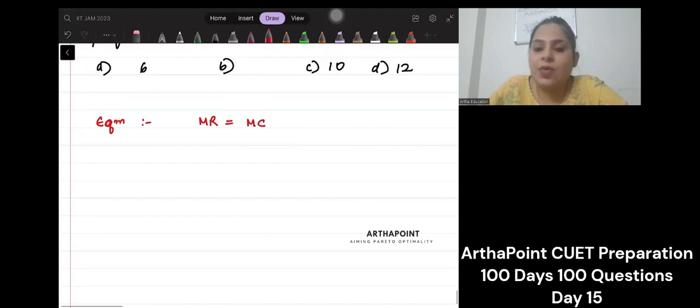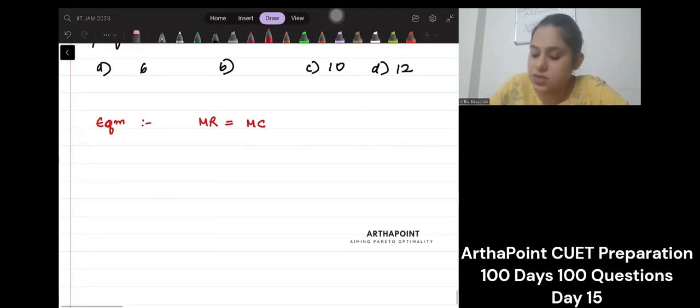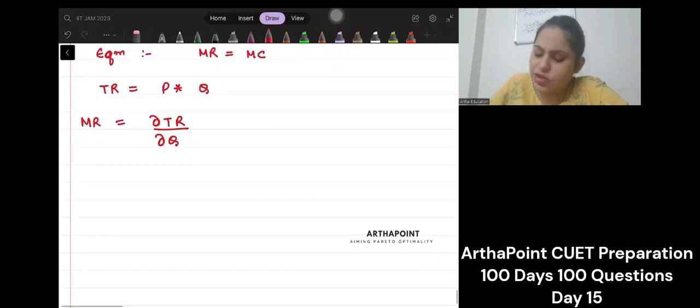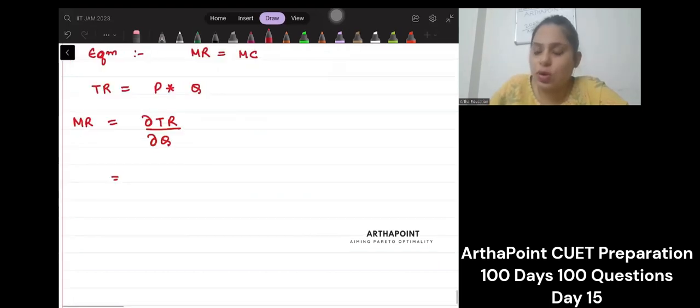And we know from the Lerner's index that, so just think about this. I will take a minute to derive this. The TR is price into quantity, and MR is how TR changes as quantity changes, right? So if I were to differentiate TR with respect to Q, what will I get? I have to use product rule here.